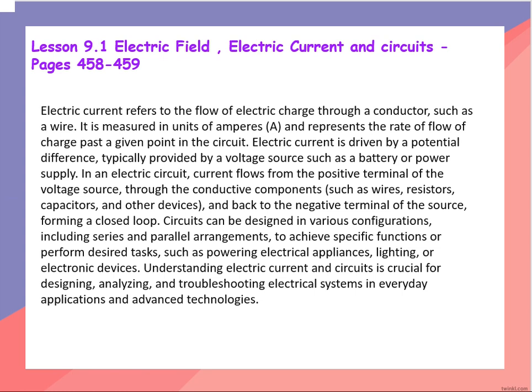Then we have electric current and circuits. Electric current refers to the flow of electric charge through a conductor, such as a wire. It is measured in units of amperes and represents the rate of flow of charge past a given point in the circuit. Electric current is driven by a potential difference, typically provided by a voltage source such as a battery or power supply.